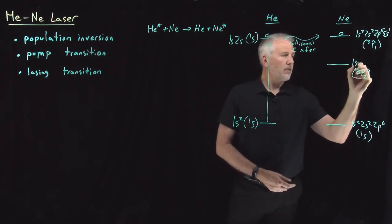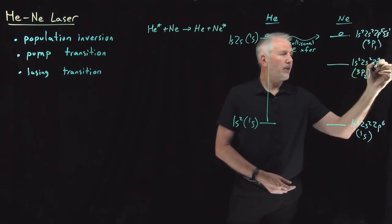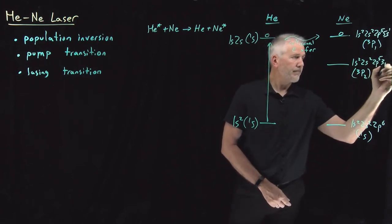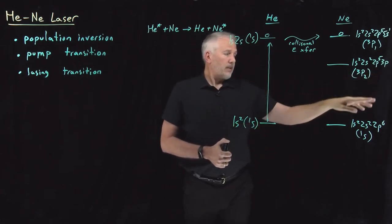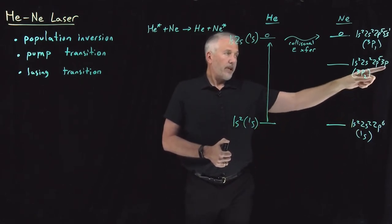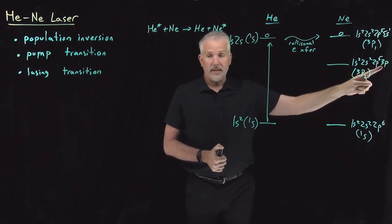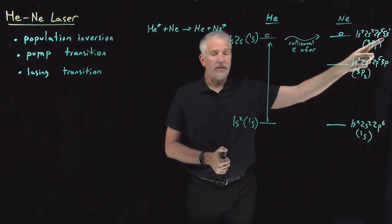That one could be described with an electron configuration if you want to think about it as 1s2, 2s2, 2p5, and then 3p. So instead of thinking of it as a Hartree product of electron wave functions, the excited single electron is excited from a 2p state up to a 3p state here or a 5s state here.